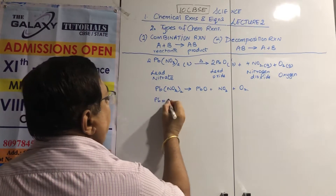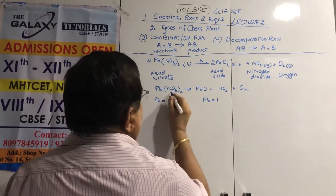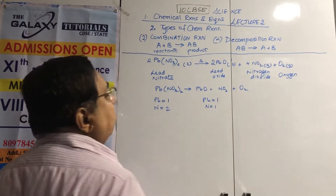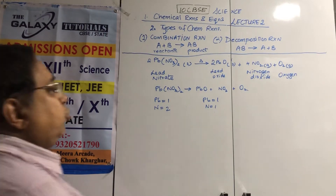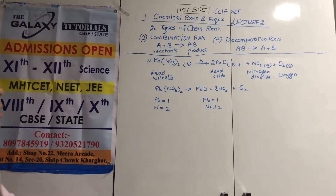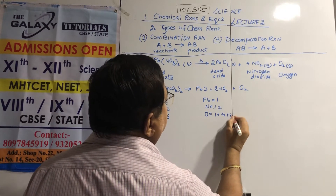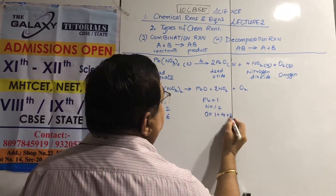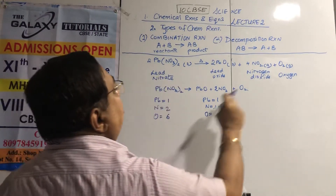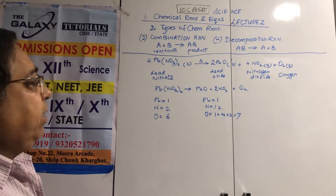First, Pb: 1 on both sides, leave it. Nitrogen: 2 on the left, 1 on the right — put a 2 before NO2. Oxygen: 6 on the left; right side has 1 (from PbO) plus 4 (from 2NO2) plus 2 (from O2) = 7. Since we can't have odd oxygen atoms, we need to make it even — put a 2 before Pb(NO3)2 to get 12 oxygen on the left.